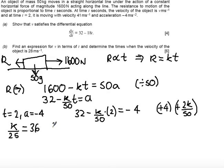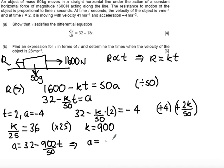Now, if I times everything by 25, what happens is we get k equals 36 times 25 will be 900. Now when I substitute this into my equation, I get a equals 32 minus 900 over 50, t, which can be cancelled, so that a equals 32 minus 18t.